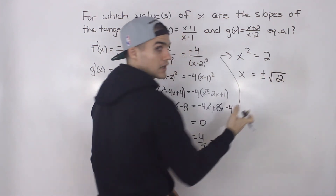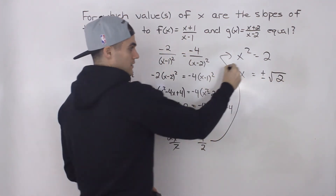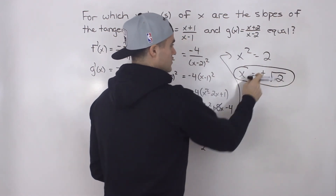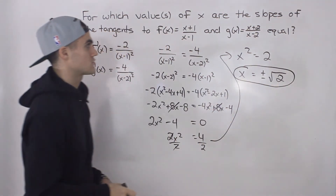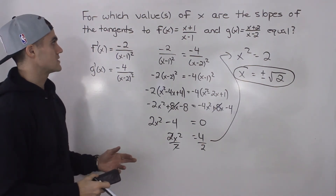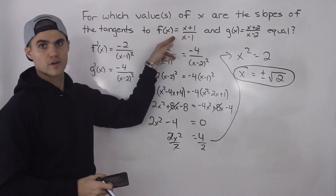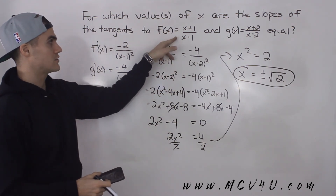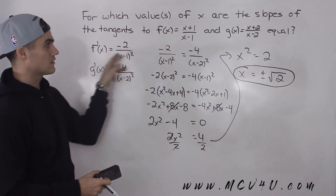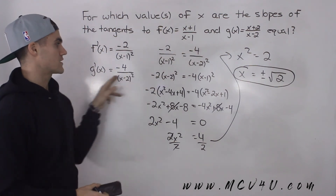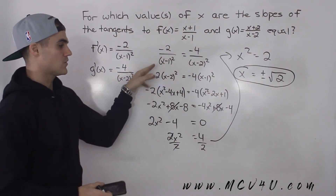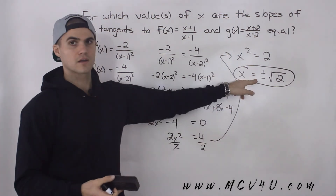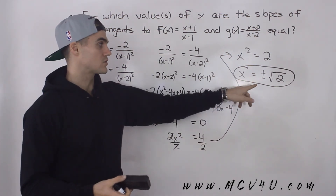So x equals plus or minus root 2, because the square root of something can be positive or negative. These are your two x values — plus root 2 and minus root 2 — for which the slopes of the tangents of both functions are equal. The approach: find f'(x), find g'(x), set them equal, and solve.